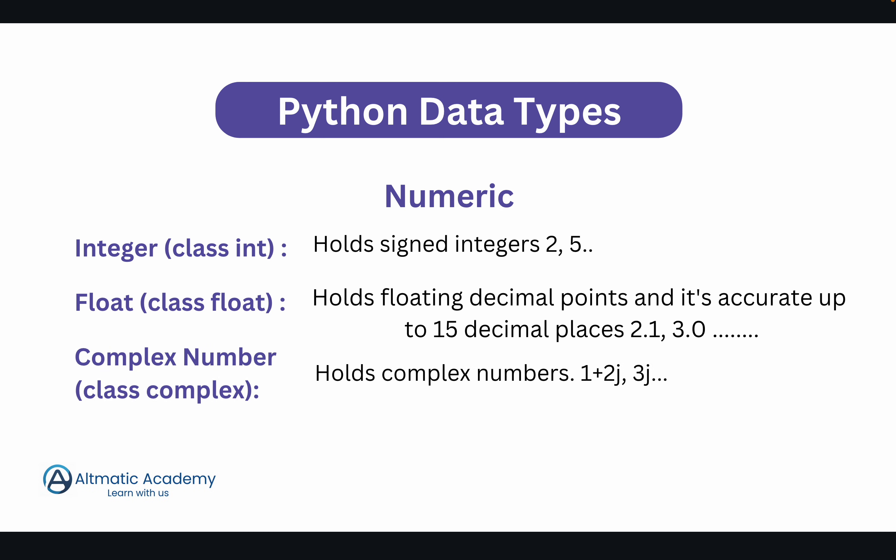The first is the numeric data type, and in numeric there are 3 as already seen: integer, float, and complex number. Integer is basically any number we deal with — it can be positive or negative. Python's internal class name for integer is int. Float is any number related to decimal points — in Python it can be up to 15 decimal points. Numbers like 2.1, 3.0, and 2.3 are floating point numbers.